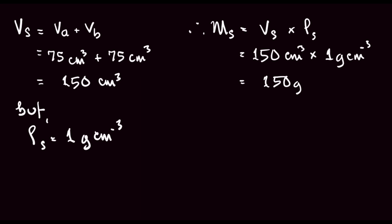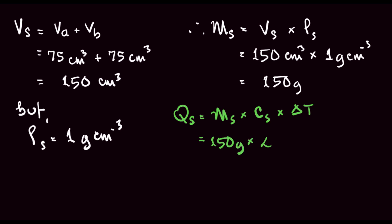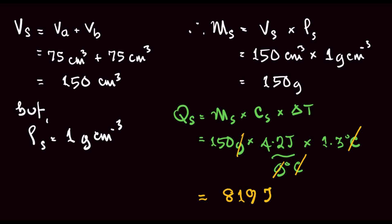We are now going to substitute these values into Q equals ms times Cs times delta T. That will be 150 grams times 4.2 joules per gram per degree Celsius, times the change in temperature, which is 16 minus 14.7 — that is 1.3 degrees Celsius. Evaluating this, we get 819 joules as the heat released by the reaction mixture.